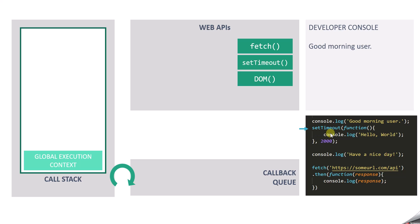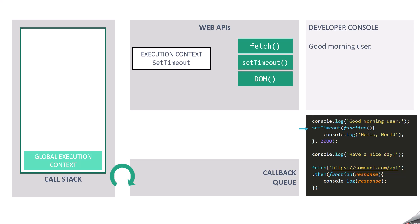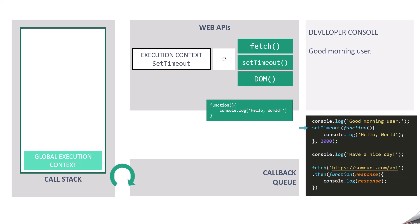Then we call the setTimeout function with a time interval of 2000 milliseconds, and we specify a callback function to execute after that interval. An execution context for setTimeout is created and handed over to the web API. The setTimeout function sits in the web API waiting for 2000 milliseconds, and the callback function gets registered and waits in the web API as well. Since it executes asynchronously in the background, the JavaScript engine will not wait for it to complete and moves to the next statement.